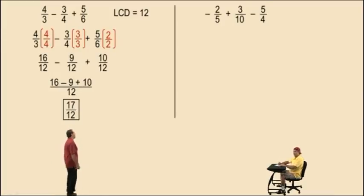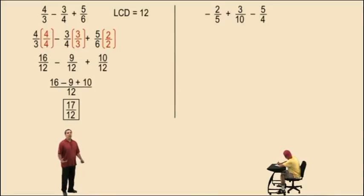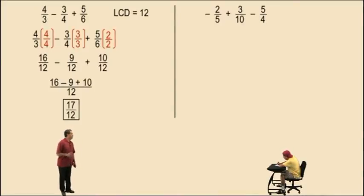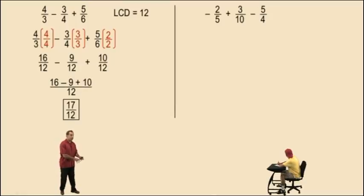Let's do another one. Here we have negative 2 fifths plus 3 tenths subtract 5 fourths. We are adding and subtracting, so we need a lowest common denominator. What's the smallest number that 5, 10, and 4 divide evenly into? Remember the little trick — start with your largest denominator. In this case it's 10. Does 10 work? No. So let's try a multiple of 10. Try 10 plus 10, which is 20. Does 20 work? Yes, it does — they all divide into 20.